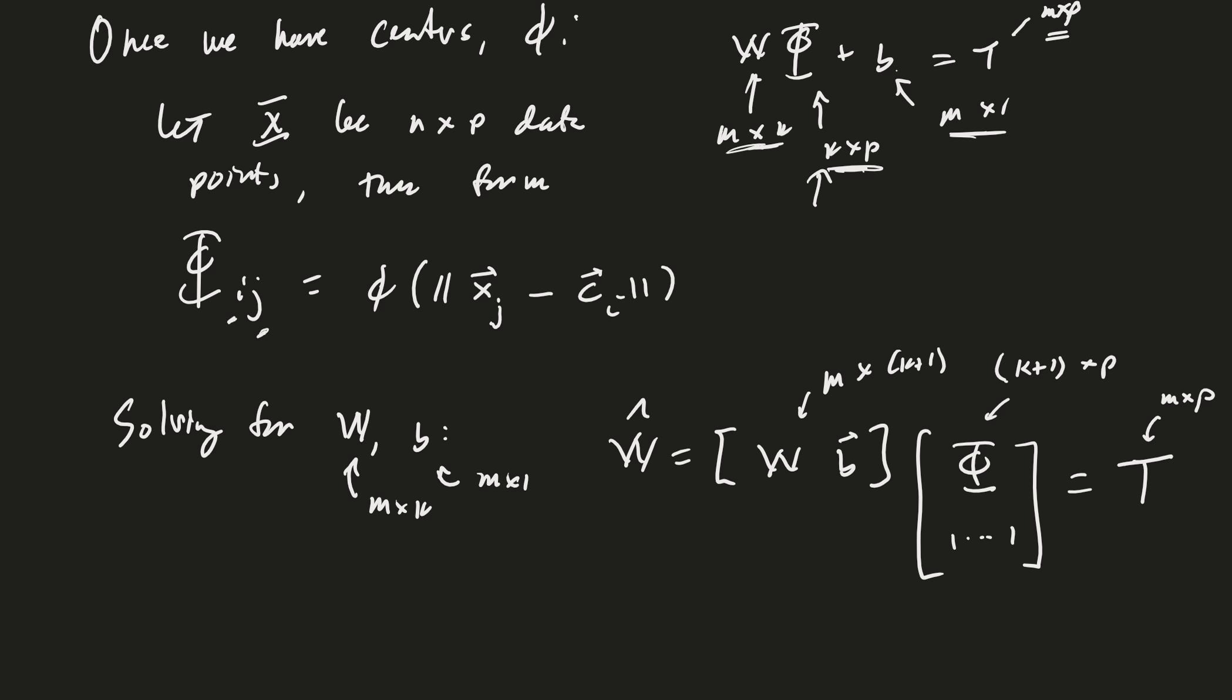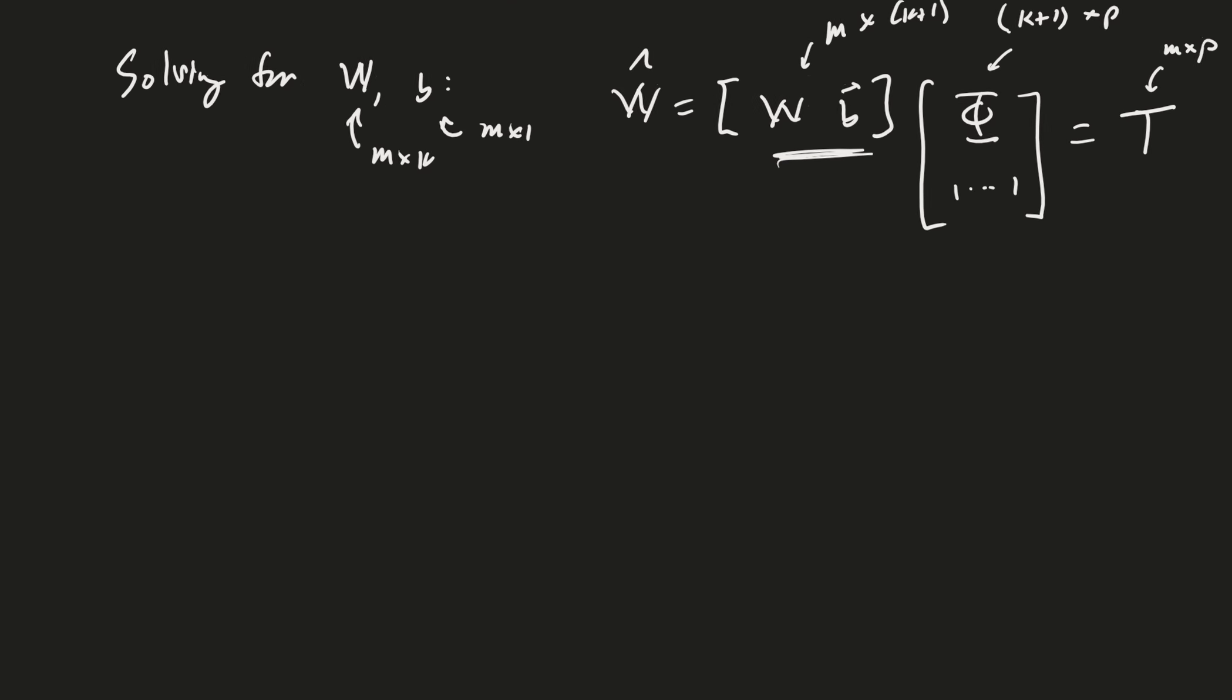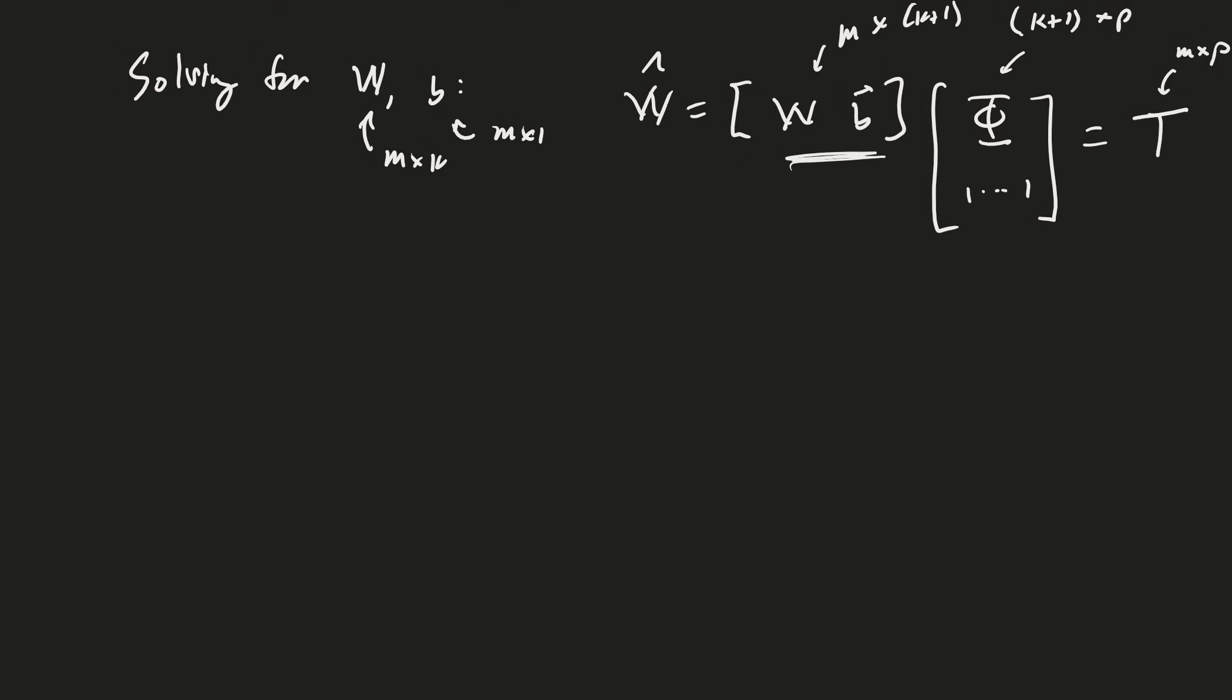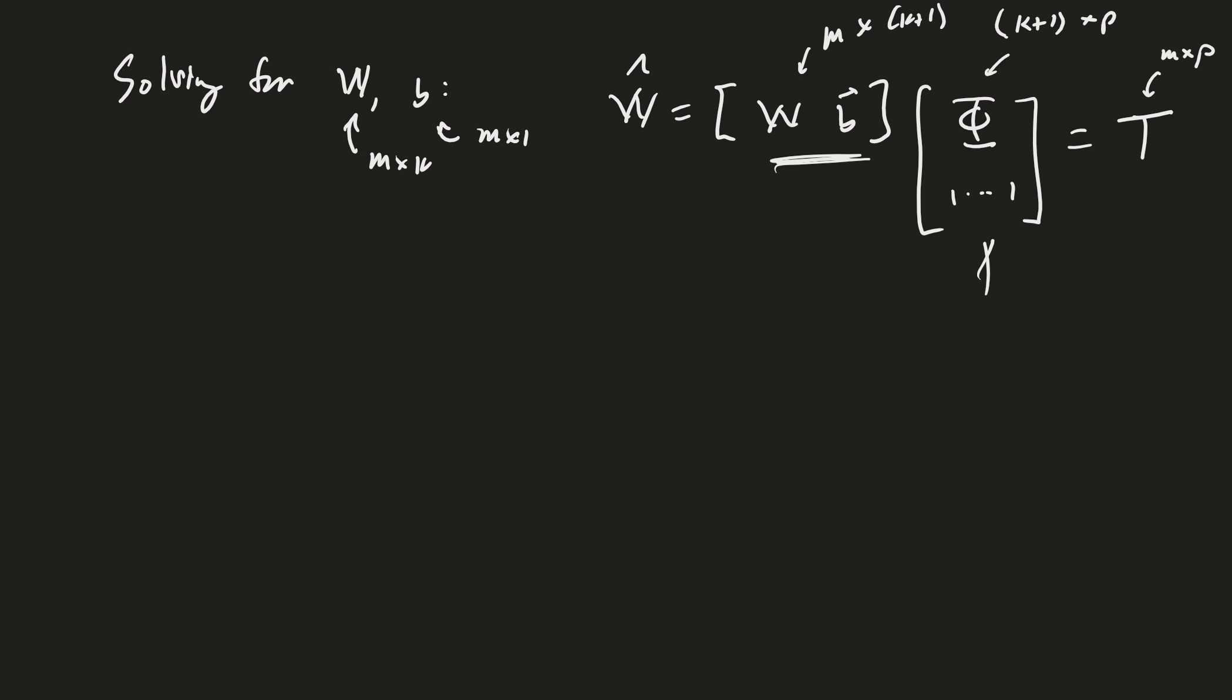So can we solve this for W? Of course. How are we going to do it? Take the pseudo-inverse. So we'll have W hat times phi, let's call it phi hat, is equal to T. We take the pseudo-inverse of that, and so we're going to be multiplying on the right from both sides, and so W hat is going to be T times phi hat dagger.